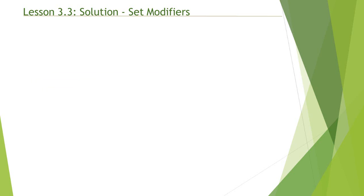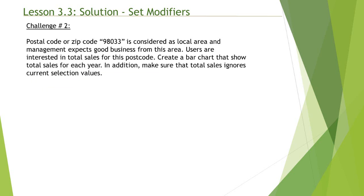Let's go over challenge number two. Challenge number two states that postal code or zip code 98033 is considered a local area and management expects good business from this area. Users are interested in total sales for this particular postal code. You're required to create a bar chart that shows total sales for each year. In addition, make sure that total sales ignores current selection values.